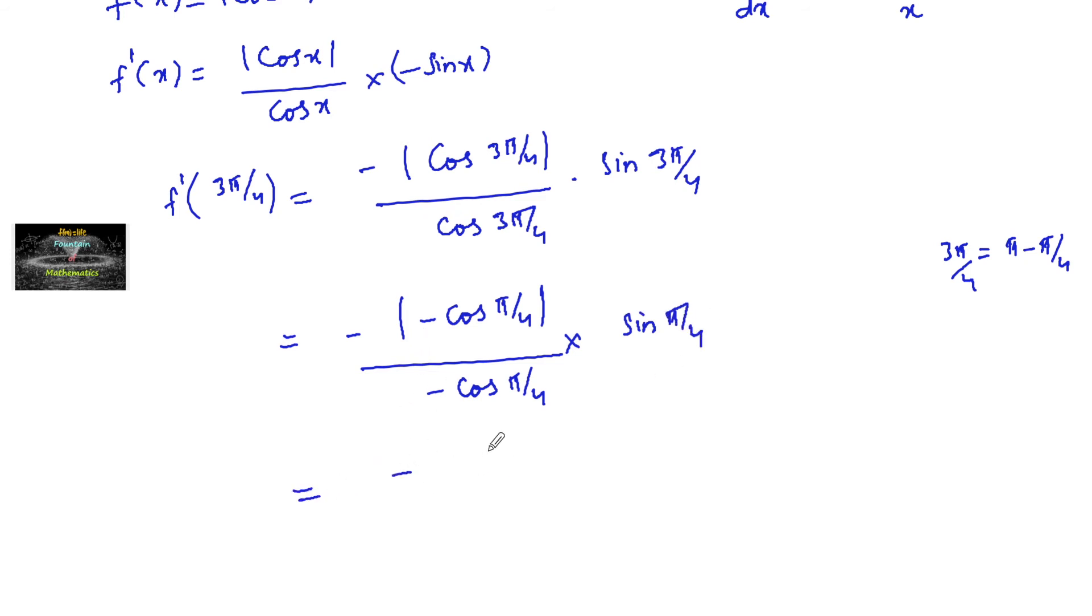So it equals minus |cos π/4|, minus 1/√2, divided by minus 1/√2 into sin π/4, which is 1/√2. So minus minus gets cancelled, 1/√2 and 1/√2 get cancelled, and |−1/√2| is plus 1/√2.